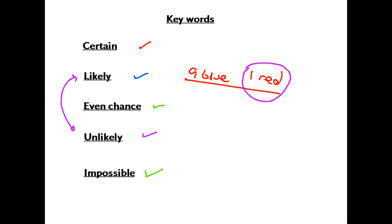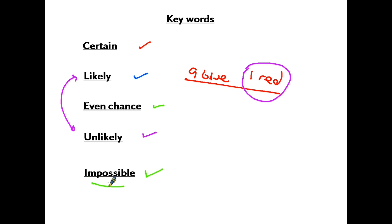I want to clarify the difference between 'unlikely' and 'impossible,' because some students mix the two up. If I asked how likely it is that it will not rain at all in England in 2021, you might practically say that is impossible — but in fact it is very, very unlikely. Technically it could happen, therefore you cannot answer 'impossible.' Impossible things have to be completely impossible.